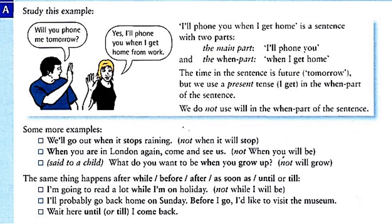In the 'when' clause we do not use 'will.' More examples: 'We'll go out when it stops raining' — not 'when it will stop raining.' And we say to a child: 'What do you want to be when you grow up?'